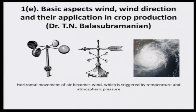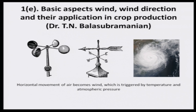Normally, in simple terms, when air is put in motion, we call it wind. Wind is nothing but horizontal movement of air. Why not vertical? That happens in collision theory with cloud droplets moving. But normally, horizontal movement of air becomes wind, which is triggered by temperature and atmospheric pressure. There is a very important relationship between temperature, atmospheric pressure, and wind.